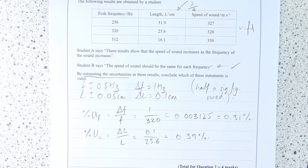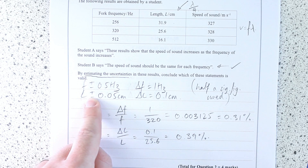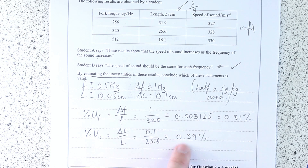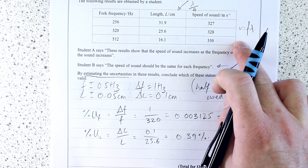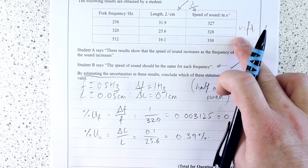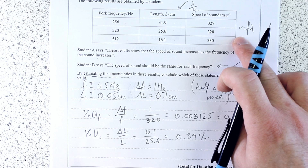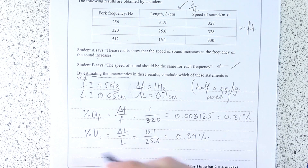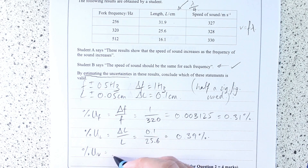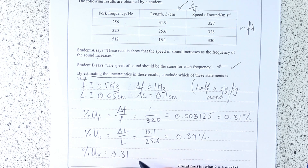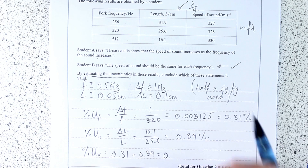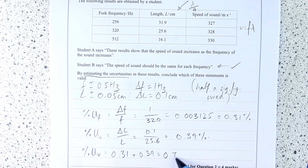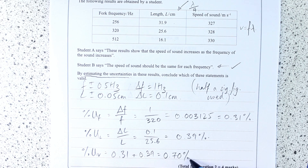I'm not quite finished, but I've picked up marks estimating my uncertainties and calculating my percentage uncertainties for the two quantities. Now I can add those together to give me the percentage uncertainty in speed, which is 0.31 plus 0.39 — in other words, 0.70%.